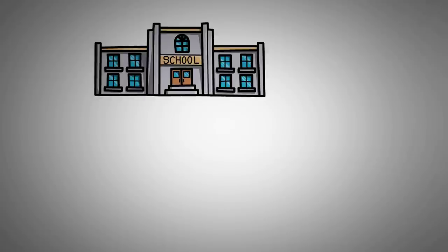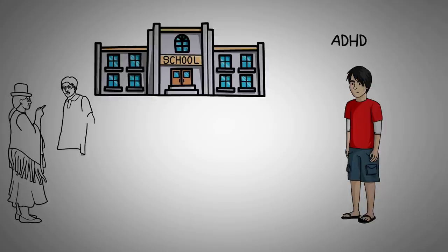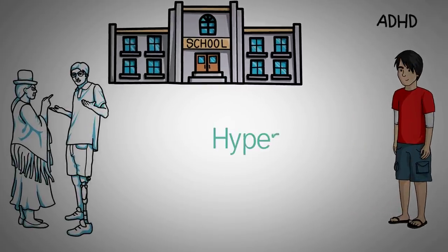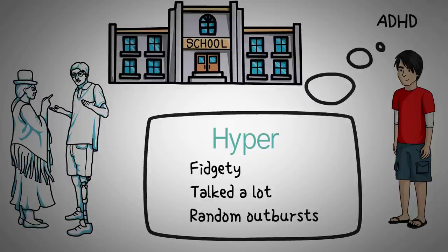Think back to elementary school. Did any of your classmates have ADHD, and if they did, what were they like? How did teachers or parents describe them? If the classmate was a boy, you might remember them as the hyper person in school — fidgety, talking a lot, or having random outbursts. Maybe teachers told them they needed to focus more. For many, this is the typical picture when they think of someone with ADHD: a child, usually a boy, always running around or being scolded for being distracted. But as you graduate, enter the workforce, and make adult friends, that picture is likely to change.